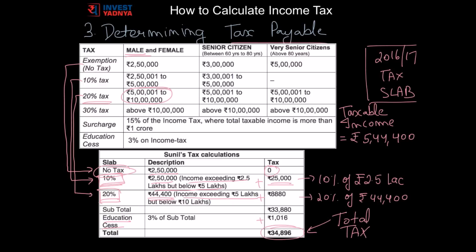So Rs 34,896 is Sunil's total tax liability for the year. Please remember there is a change in tax slab for year 2017-18. This has become 5% and there is an additional surcharge of 10% for income between 50 lakhs to 1 crore. Rest all remains same.